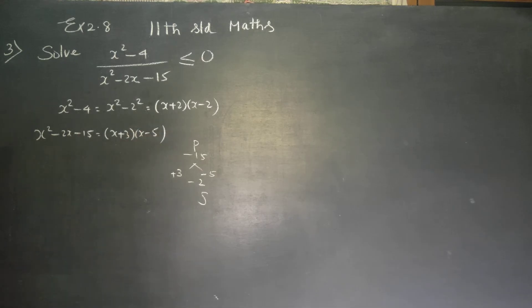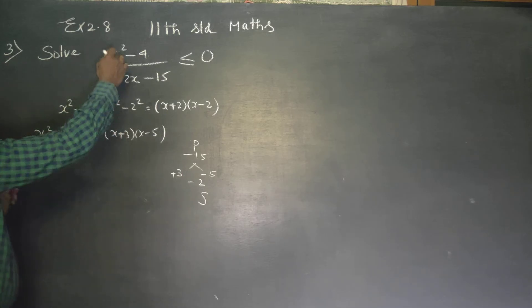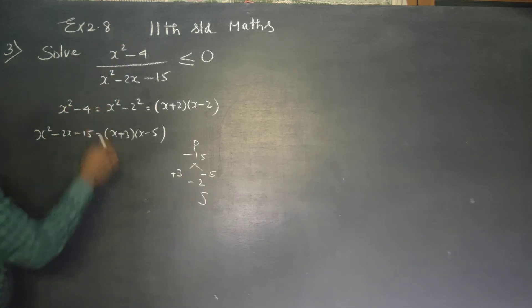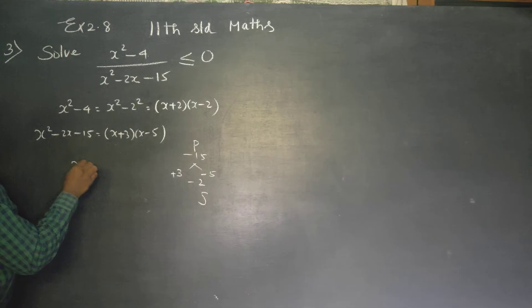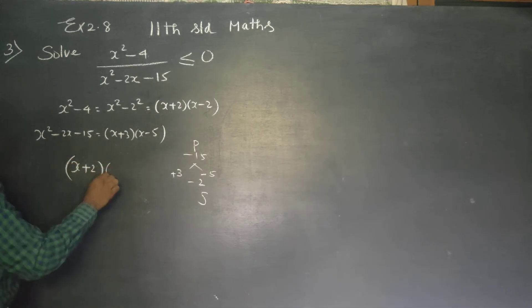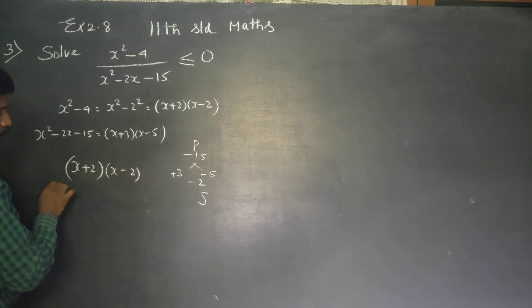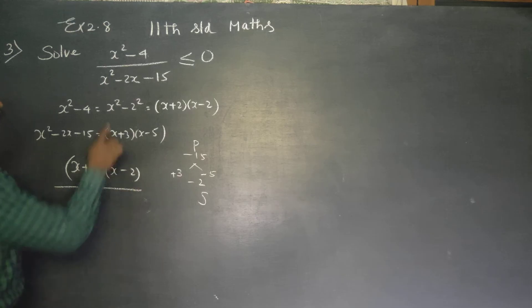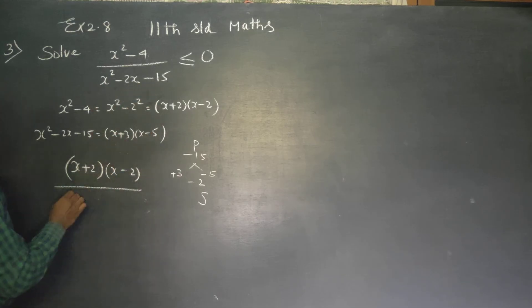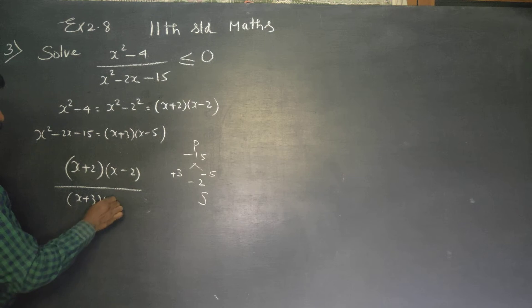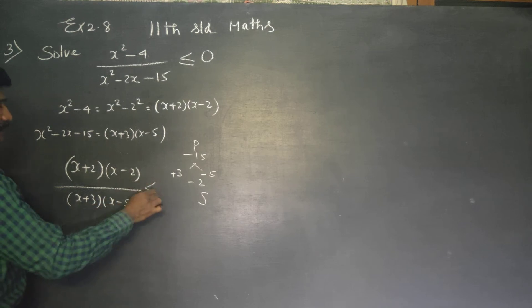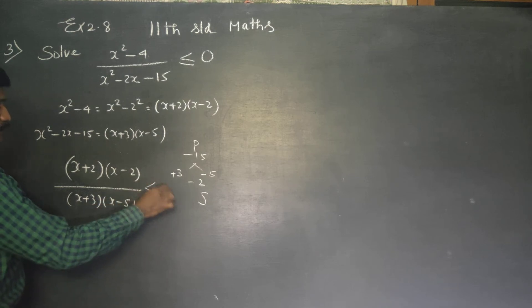Now I will factorize the numerator and denominator of the original question. The numerator becomes x plus 2 into x minus 2, divided by the denominator which becomes x plus 3 into x minus 5, and this is less than or equal to 0.